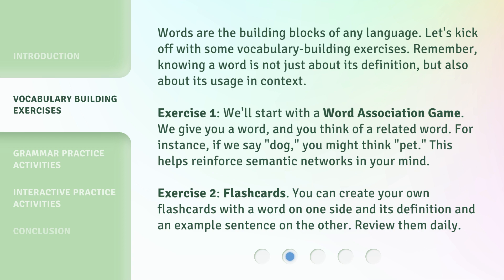Exercise 1: We'll start with a word association game. We give you a word, and you think of a related word. For instance, if we say 'dog,' you might think 'pet.' This helps reinforce semantic networks in your mind.